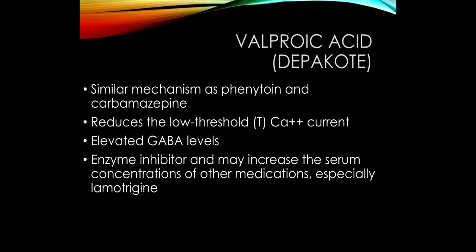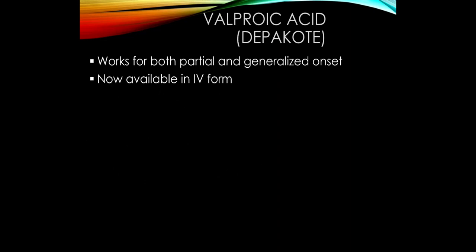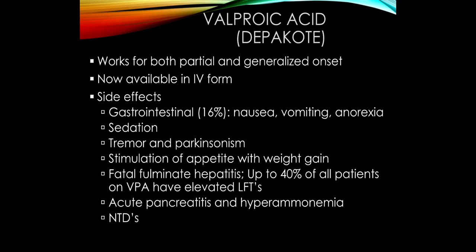Valproic acid has multiple different mechanisms of action, which is why it's broad spectrum — it works for both partial and generalized onset seizures. It works on the sodium channels like phenytoin and carbamazepine, but also works on low-threshold calcium currents, making it effective for generalized onset seizures. It also increases GABA levels, probably by inhibiting the breakdown of GABA. It's available in IV form, which makes it useful for status epilepticus.